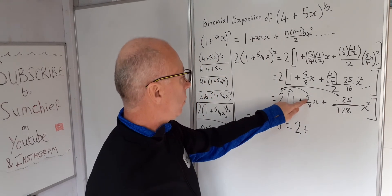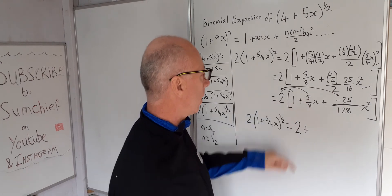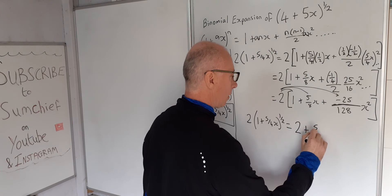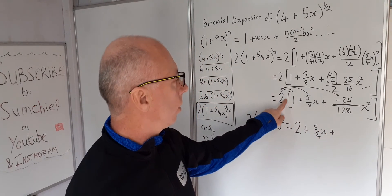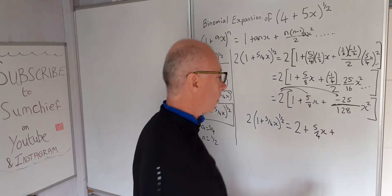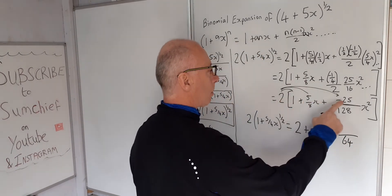So we're then left with 2 plus, 2 times 5 over 8, well 2 and 8 gives us a 4 on the bottom, so 5 over 4 x plus, 2 and the 128 gives us 64 on the bottom.